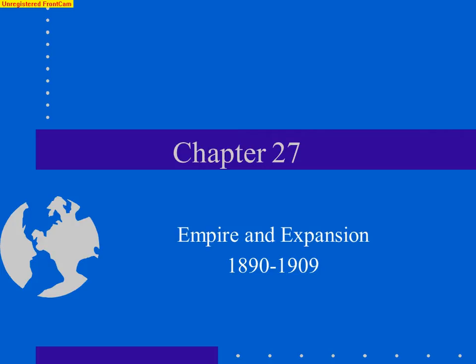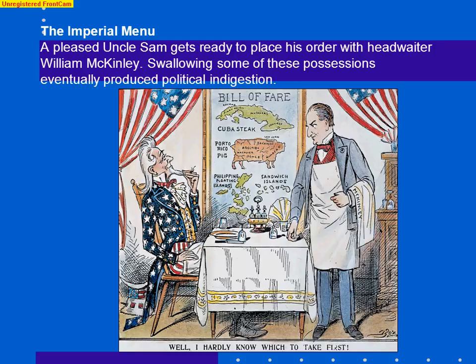Chapter 27 focuses on the creation of an American empire between 1890 and 1909. Here is a political cartoon depicting Uncle Sam deciding what he is going to carve up for his dinner. You notice Cuba, Puerto Rico, the Philippines, et cetera — and we'll get to all of these in the slides to come.